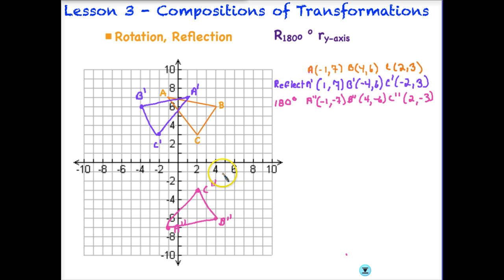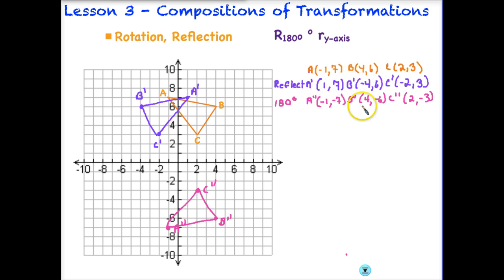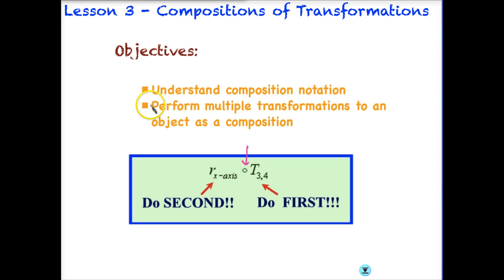Now I have performed a composition of transformations — first reflecting over the y-axis to get the first triangle, then rotating 180 degrees to get the final image. Remember: each transformation is made on the result of the previous one, starting with the new coordinates each time. That concludes our lesson on compositions of transformations. Hopefully you now understand composition notation — remember to do the last one first and the first one second — and can perform multiple transformations to an object, called a composition.